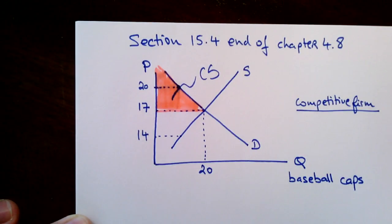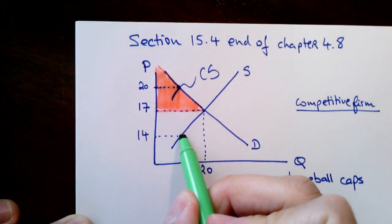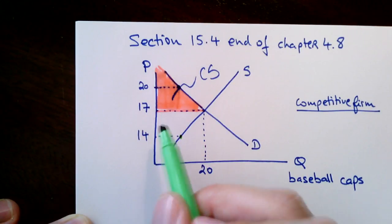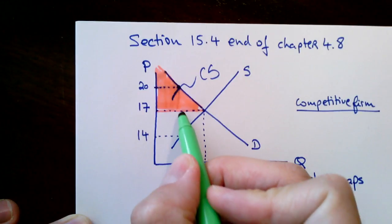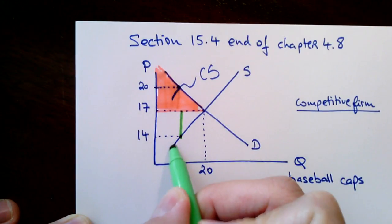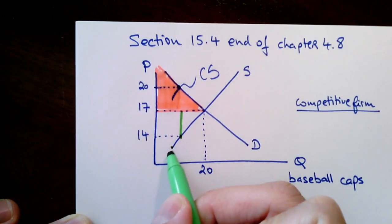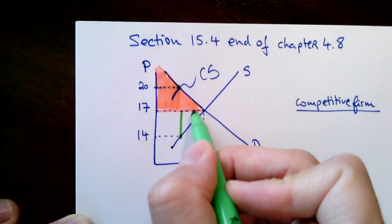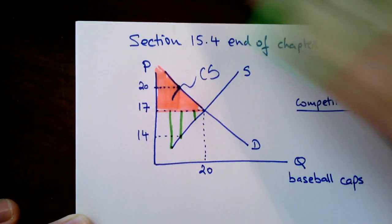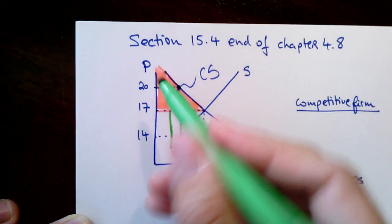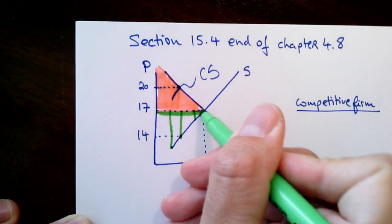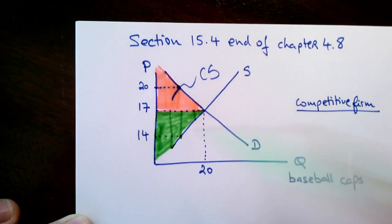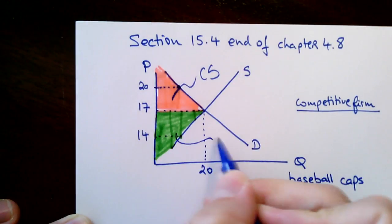Now if we want to derive producer surplus: one firm was willing to accept only $14 and ended up getting $17 because that's the market price for those baseball caps — that's a surplus of $3. There was even a firm willing to accept a lower price, like $16, giving a surplus of $1. The overall surplus for producers is everything below the price line and above the supply curve.